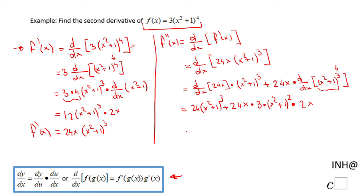Let's do some simplification. We have 24 times the quantity x squared plus 1 to the 3rd power, plus 24 times 3 times 2 — that's 144 — so plus 144x times x squared plus 1 squared.